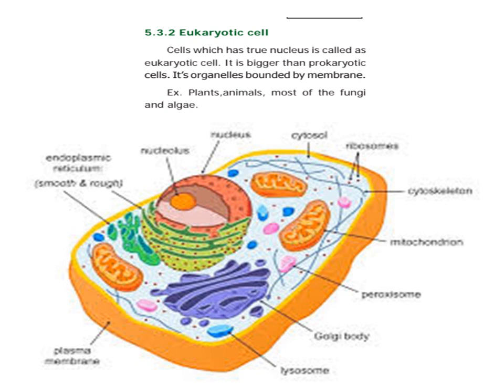Eukaryotic cells have organelles bounded by membrane. Examples include plants, animals, fungi, and algae.